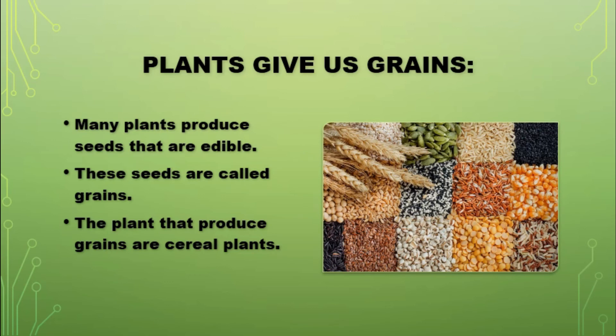Many plants produce seeds that are edible. These seeds are called grains. Rice, barley and pulses are some examples of grains. The plants that produce grains are called cereal plants.